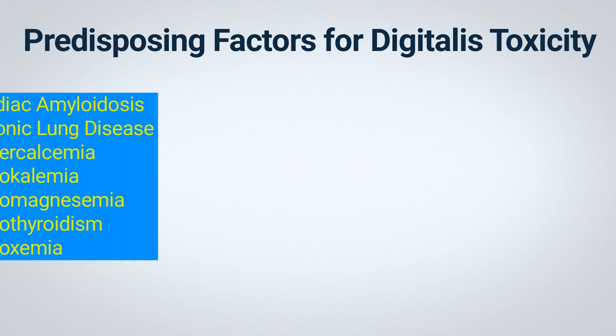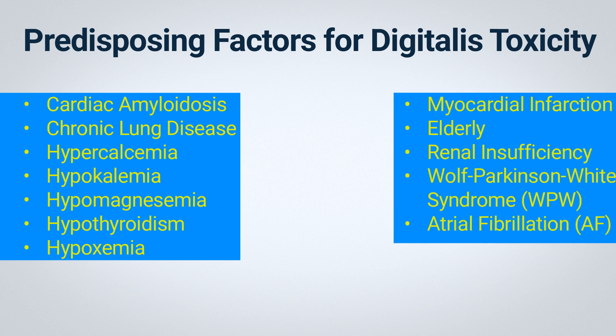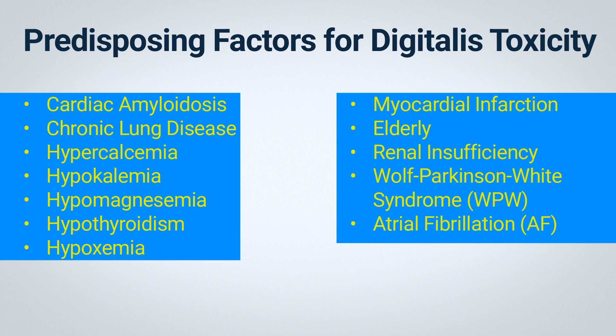These predisposing factors include patients with cardiac amyloidosis, those with chronic lung disease who have a higher propensity to develop toxicity, patients with hypercalcemia or hypokalemia, and those with hypomagnesemia. Additionally, patients with hypothyroidism, hypoxemia, those undergoing an acute myocardial infarction, the elderly, and those with renal insufficiency are also predisposed, as these conditions can decrease digoxin clearance. Moreover, patients with atrial fibrillation and Wolff-Parkinson-White syndrome are at higher risk for digitalis toxicity when using digoxin.